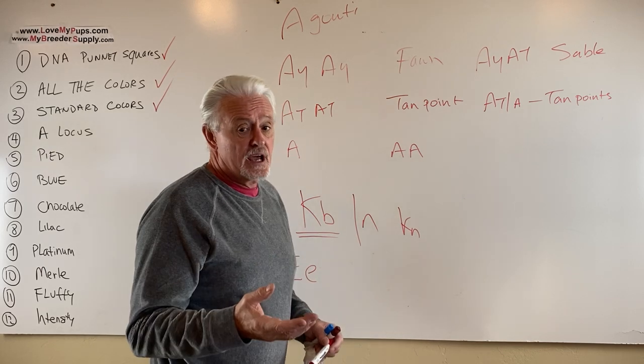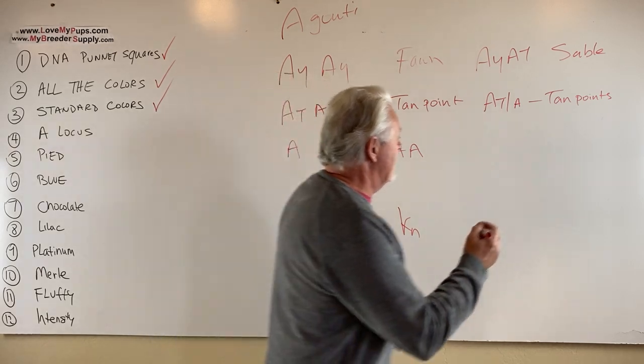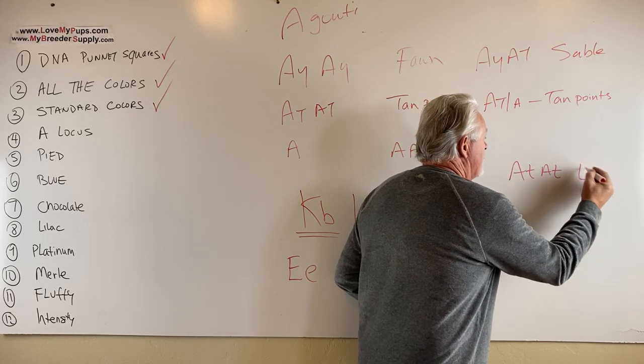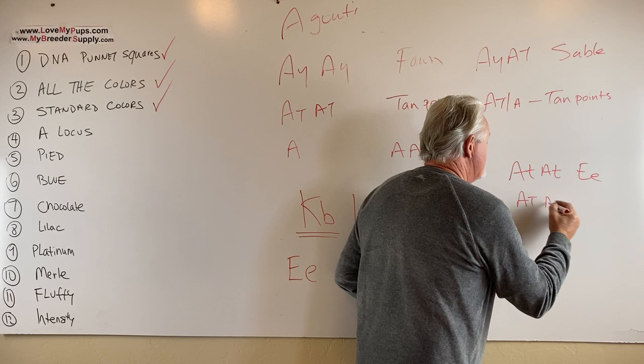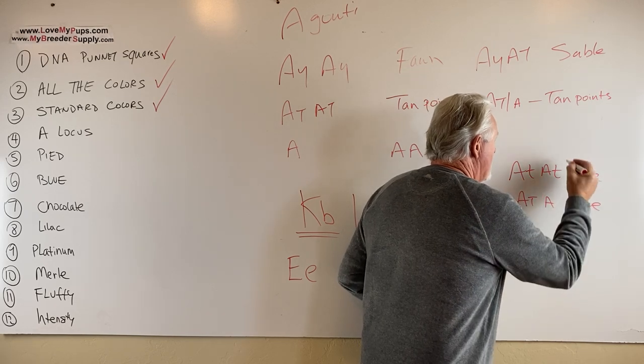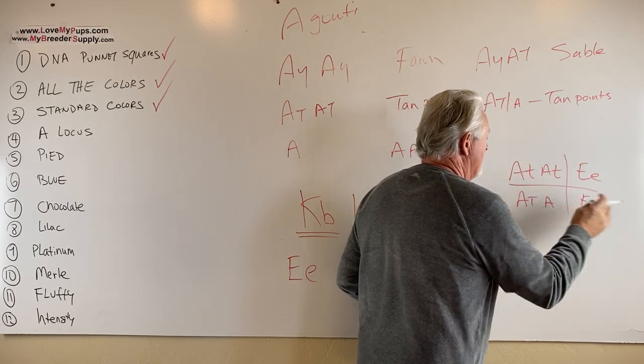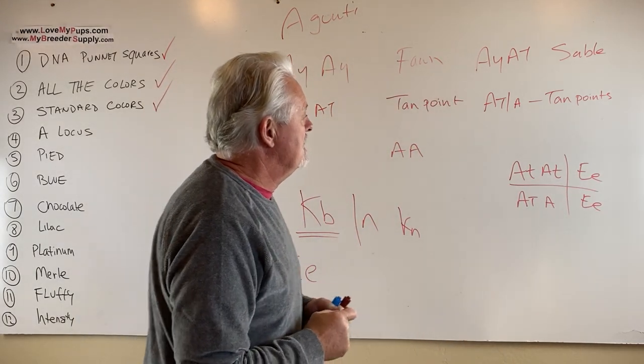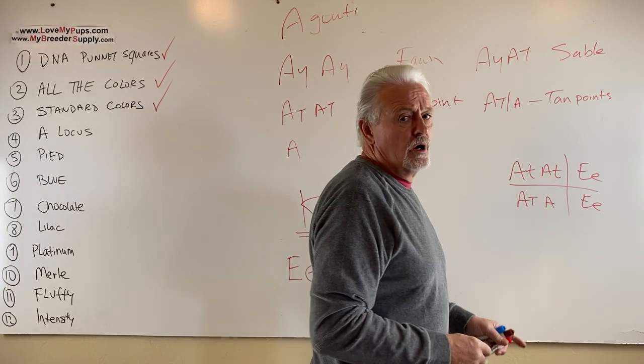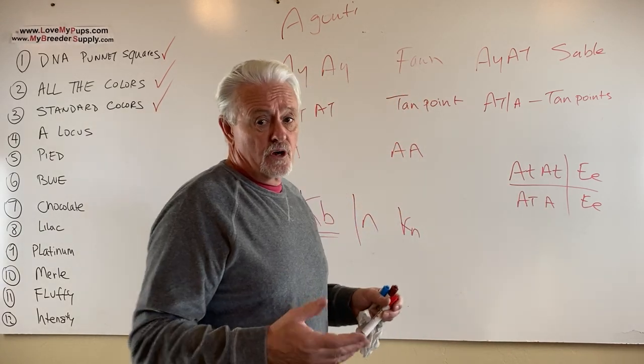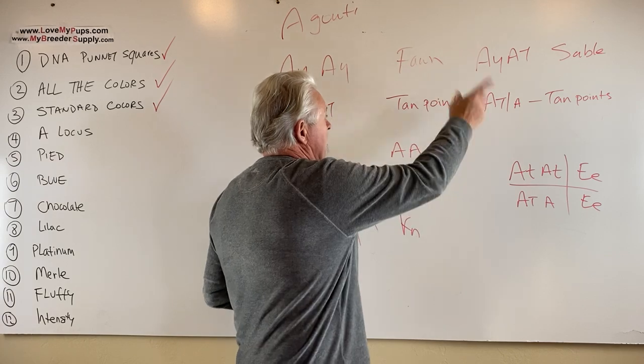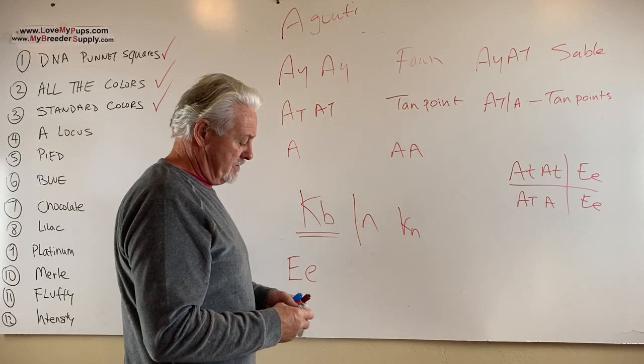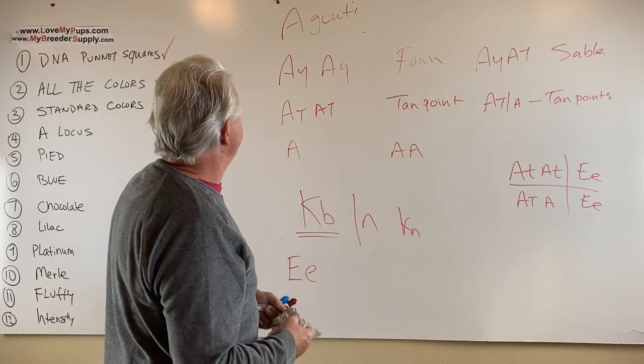So that's really nice if you're trying to produce tan-pointed dogs. What you'd like to see is either an ATAT dog that has one copy of cream, or an ATA dog that has one copy of cream. That makes for really nice clear tan points. So that is, in my opinion, something to go for if you're looking for a tan-pointed dog. If you don't want a tan-pointed dog, you better not have an AT gene present, or you better cover it in cream, or you better make it brindle, otherwise it's going to show up.